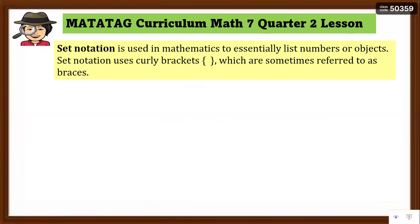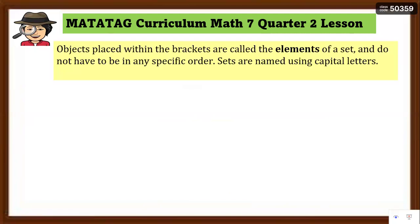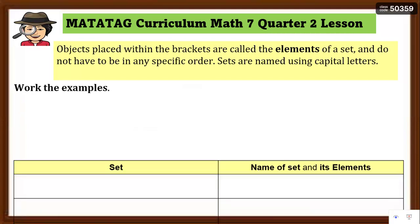Next, set notation is the symbol used in mathematics to essentially list numbers or objects. Set notation uses curly brackets — sometimes referred to as braces. Objects placed within the brackets are called elements, and they do not need to be in any specific order, as long as they are separated by commas and enclosed by braces. The name of the set is written in capital letters.